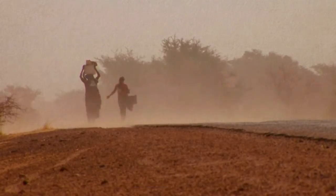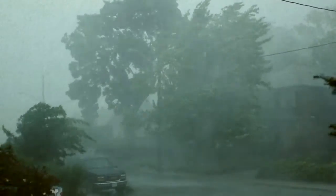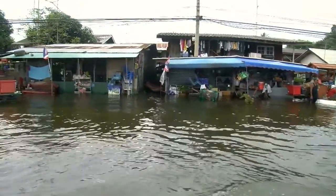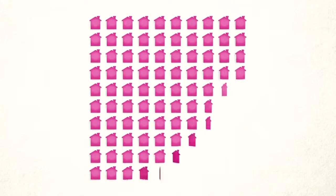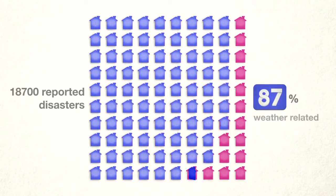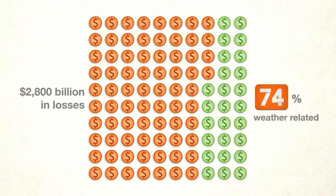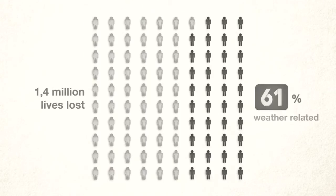Disasters caused by droughts, floods, windstorms, earthquakes and other hazards take people's lives and cause widespread economic damage. Weather extremes caused some 87% of reported disasters between 1980 and 2012, whereas earthquakes, tsunamis, landslides, volcanoes, forest fires and others are responsible for the remaining 13%. Weather extremes also caused almost two-thirds of losses related to disasters and are responsible for the greatest number of lives lost.